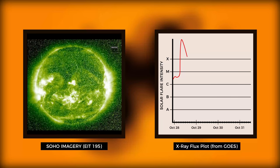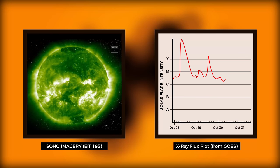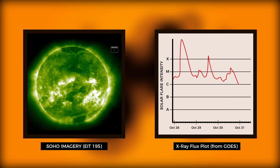Sunspots are unique because they can produce solar flares. During a solar flare, large amounts of radiation are released from the sun at light speed, reaching Earth in about 8 minutes.